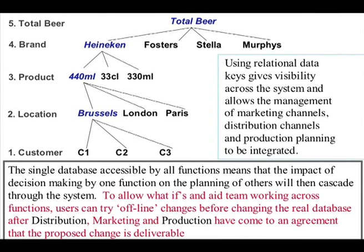This shows the use of relational data keys giving visibility across the system and allowing management of marketing channels, distribution channels, and production planning to be integrated — total beer, brand of beer, size of brand, location, and customer. A single database accessible by all functions means the impact of decision-making by one function cascades through the system. Users can try offline what-if changes before altering the real database, and once distribution, marketing, and production agree, the temporary database is made live.